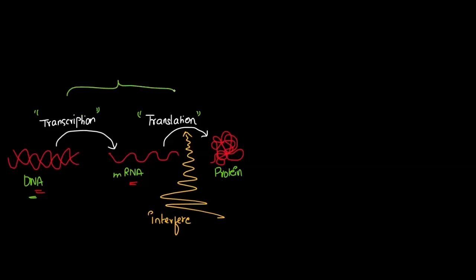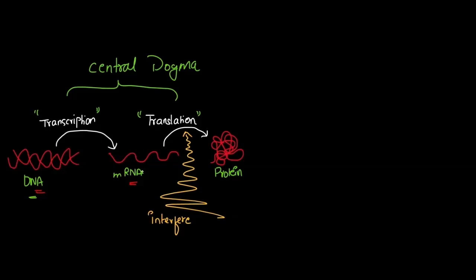So this step is known as the central dogma. The DNA is converted into RNA via a process called transcription, and this RNA — the information stored in this RNA — is converted into protein by the process called translation.